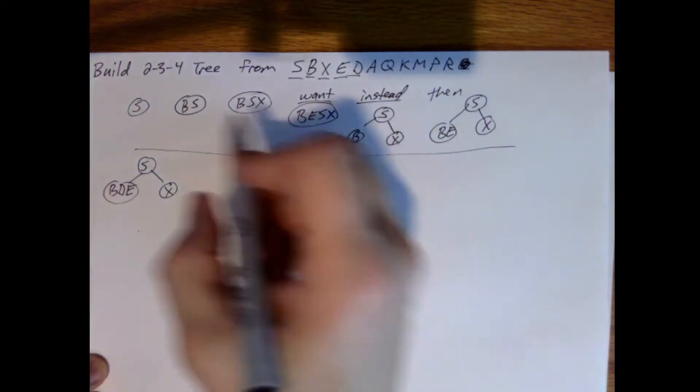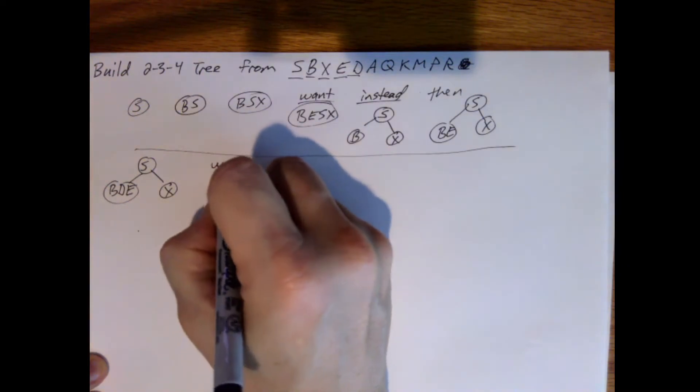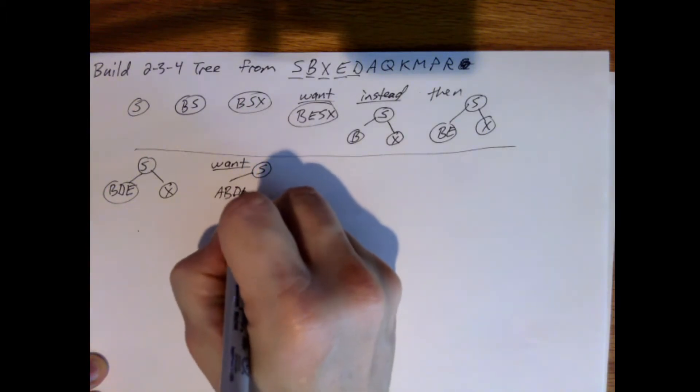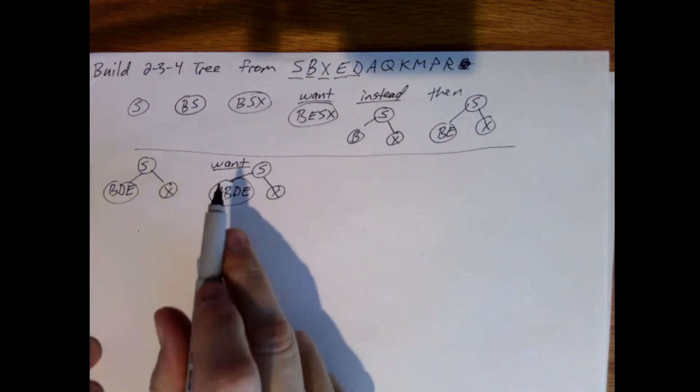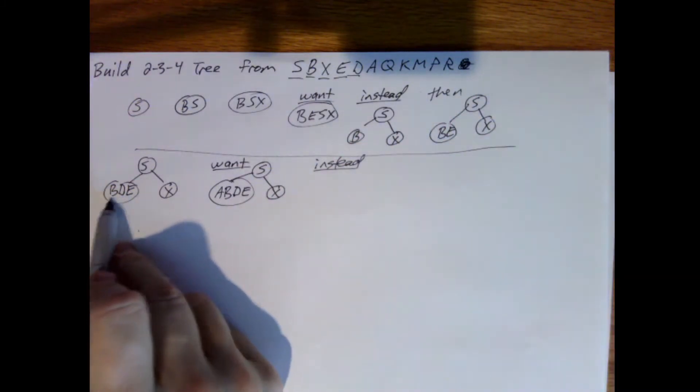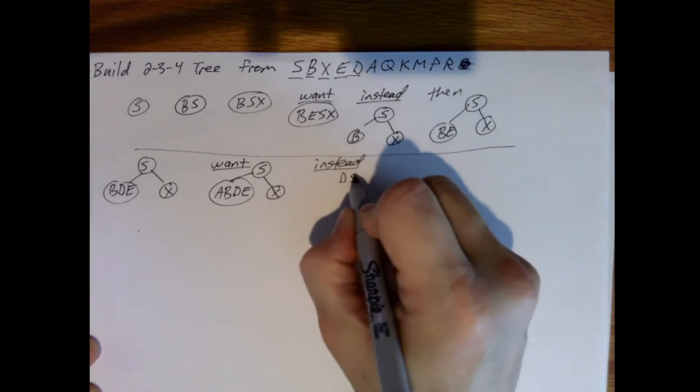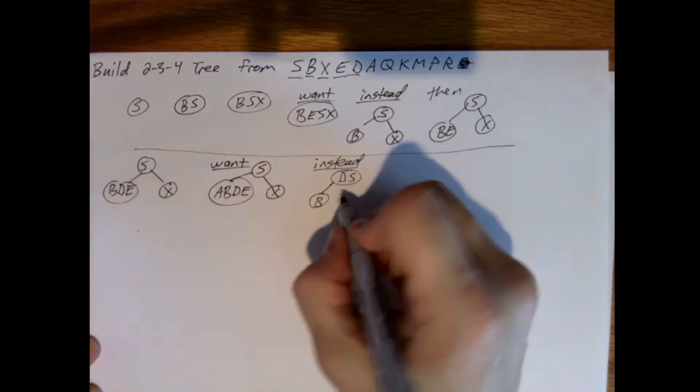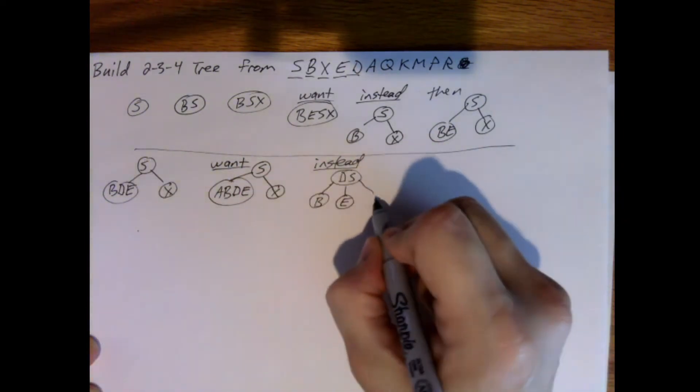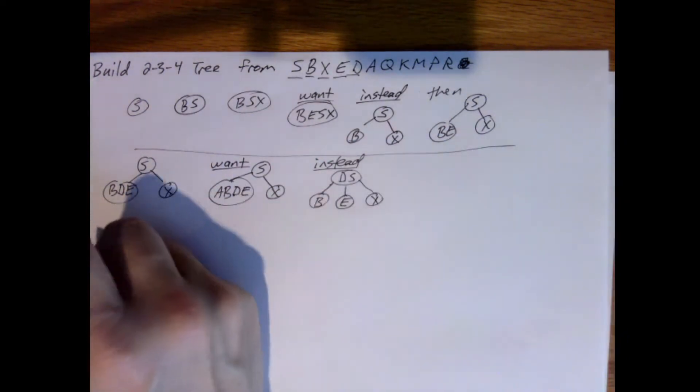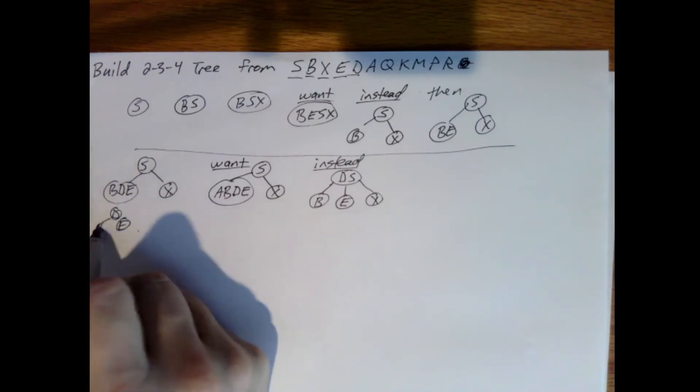Now I want to add A. So it would come to here, move down to here. A would go in here. But the problem is I have four keys. So instead, I'm going to split on the D, and the D moves up a level. So I'll have D, S. Before D is the B. After D, but before S, is the E. And the X is still after S.